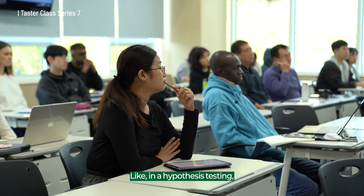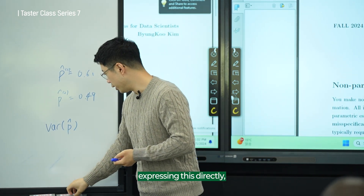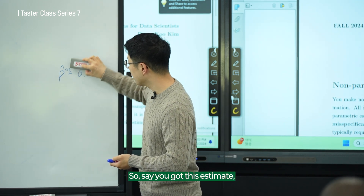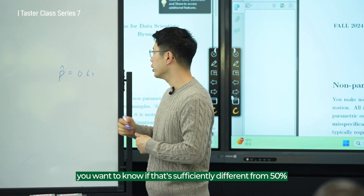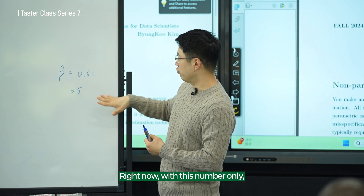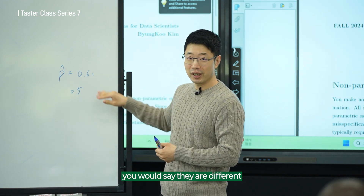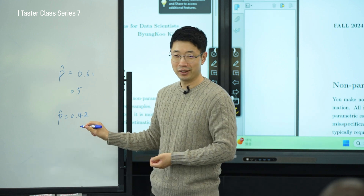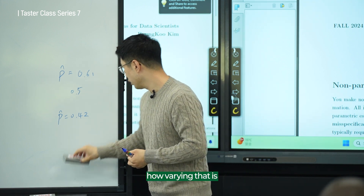In hypothesis testing, you're expressing this uncertainty directly. Say you got an estimate and you want to know if it's sufficiently different from 50%. With one number alone, you would say they're different, but your opinion might change if your second survey outcome says 42. So it's really important to consider how varying the estimates are.